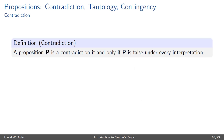A contradiction is a proposition or formula if and only if that proposition is false under every interpretation. That is, no matter how we assign truth values to the propositional letters that compose that formula, that formula always comes out as false given the interpretation and valuation rules.